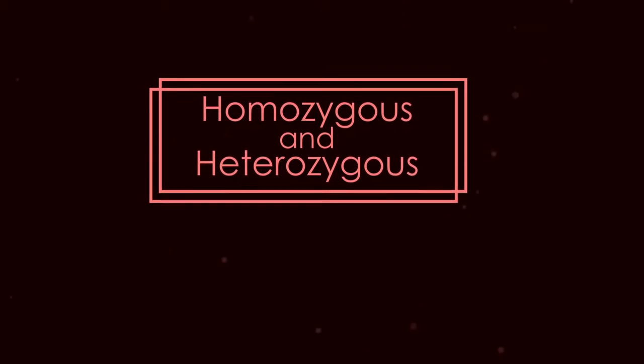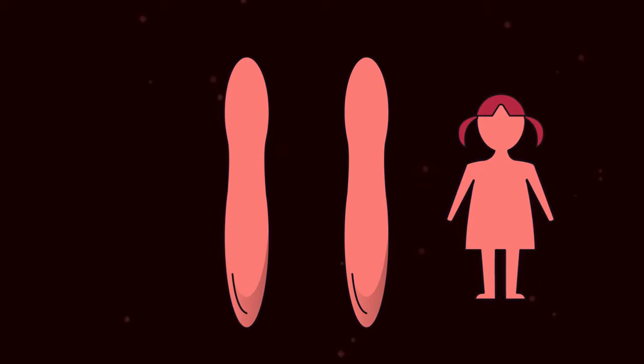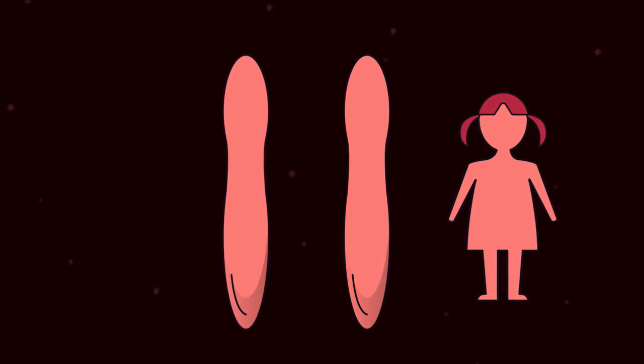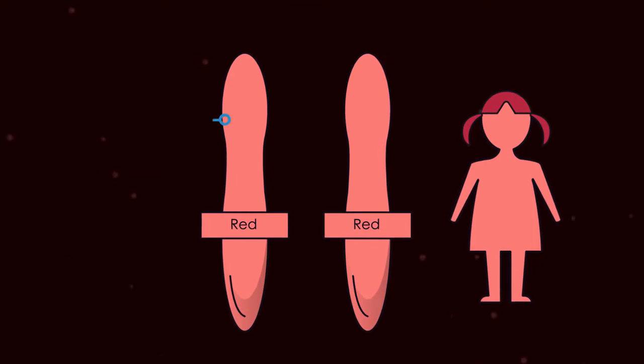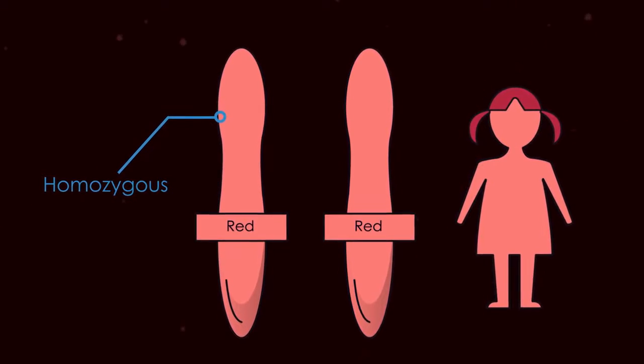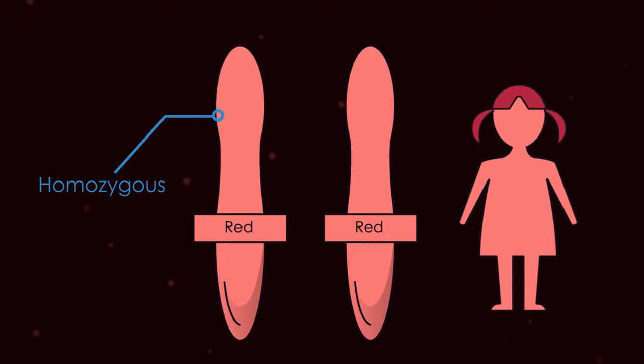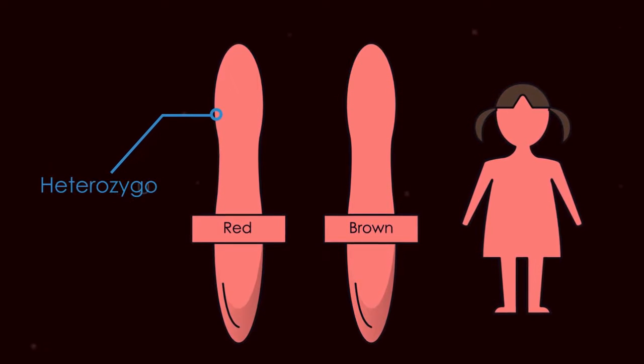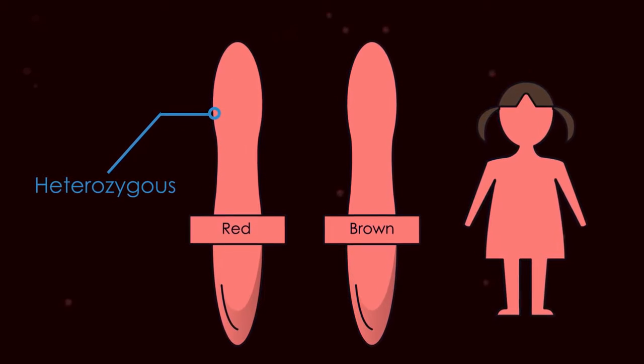Alternative forms of a given gene are called alleles. When an individual has two of the same allele, so both coding for red hair, they are homozygous. Both genes are identical. Whereas if one allele codes for red hair and the other for brown hair, they are heterozygous. Two different forms of the same gene are present.